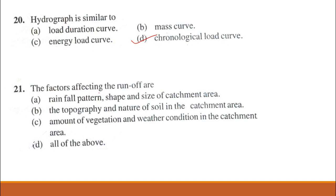Problem 21. The factors affecting the runoff are: rainfall pattern, shape and size of catchment area; topography and nature of soil; amount of vegetation; or all of the above. The factors affecting runoff rate: all of the above. D is correct.